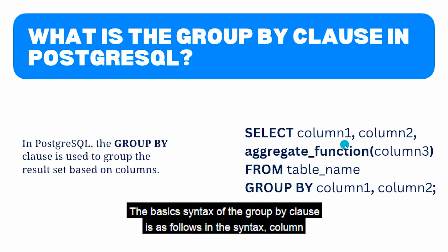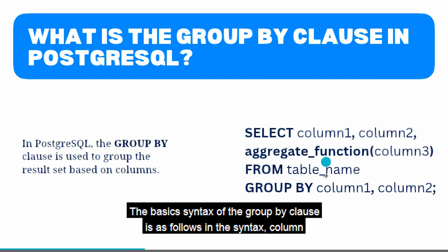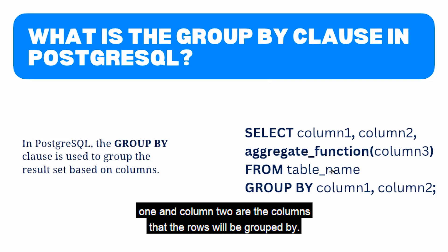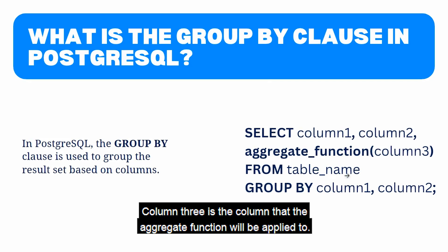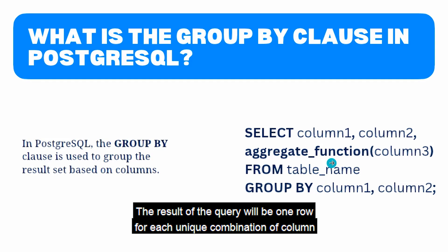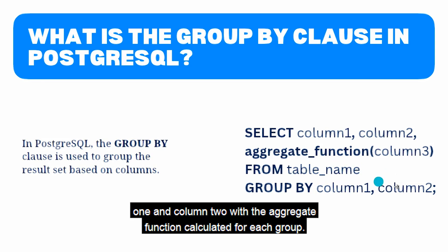The basic syntax of the GROUP BY clause is as follows. Column 1 and column 2 are the columns that the rows will be grouped by. Column 3 is the column that the aggregate function will be applied to. The result will be one row for each unique combination of column 1 and column 2, with the aggregate function calculated for each group.